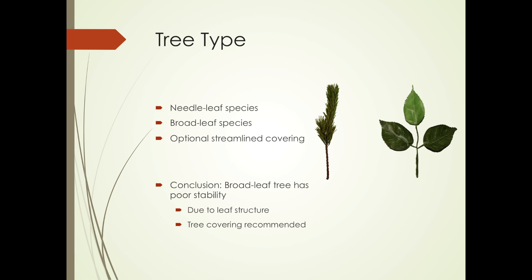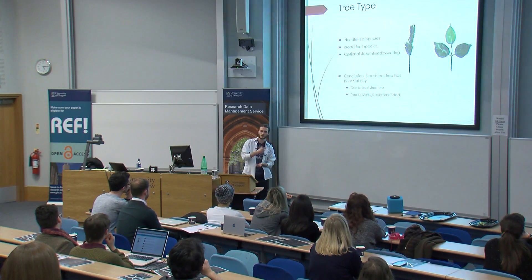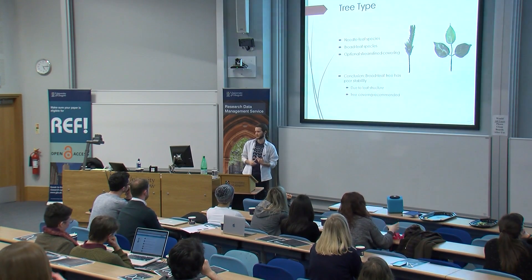After testing, it was found that the broad leaf trees have very poor stability characteristics, due to the very large leaves. So in that case, it's recommended that a covering be placed over the broad leaf trees — and the covering will come off once it lands. This is deemed not to be necessary for needle leaf trees because they have much better stability characteristics.